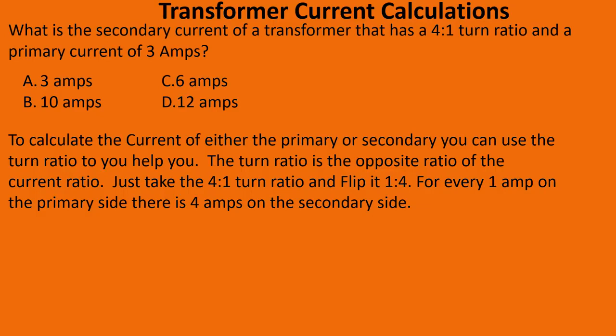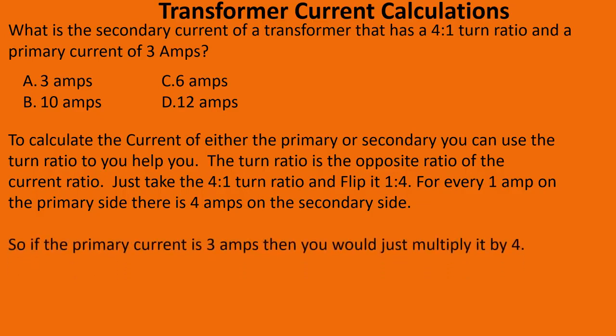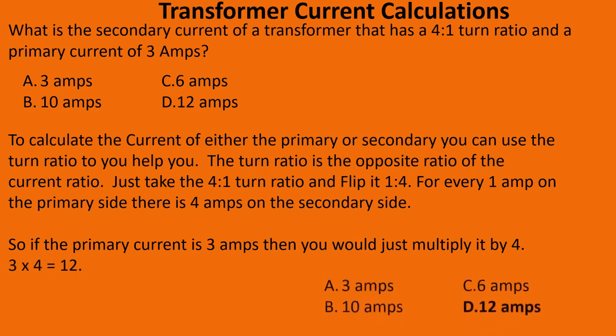Just take the four-to-one turn ratio, flip it, and now you have a one-to-four current ratio. For every one amp on the primary there are going to be four amps on the secondary. So if the primary current is three amps, you multiply by four: three multiplied by four equals twelve, and we're going to select D.